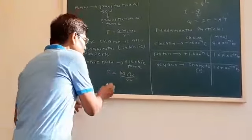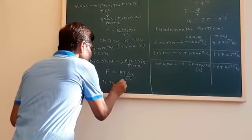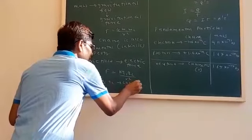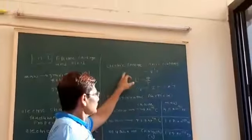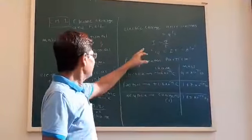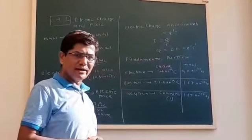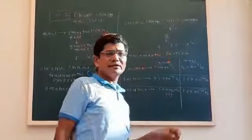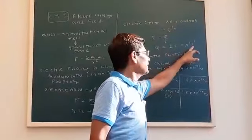Q1 and Q2 are charges. The electric charge unit is Coulomb, given by Q. We have studied the formula I is equal to Q by T, so Q is equal to I·T. The dimension here is A1 and T1.